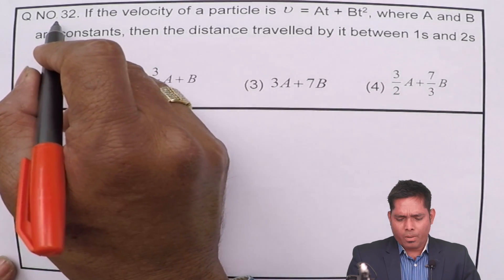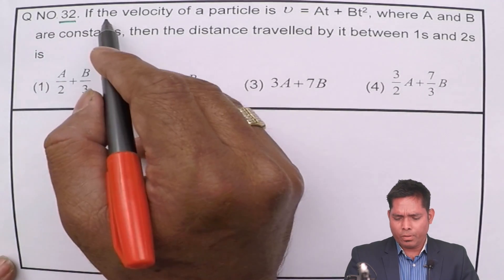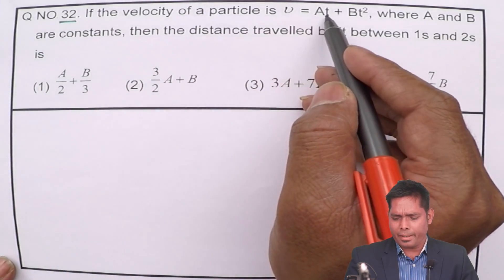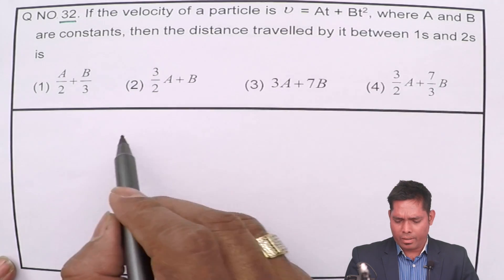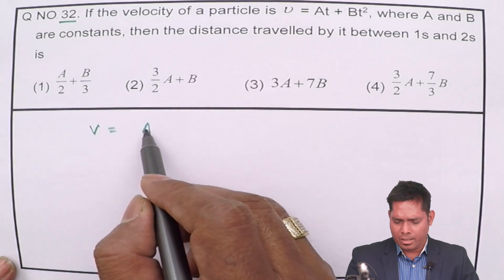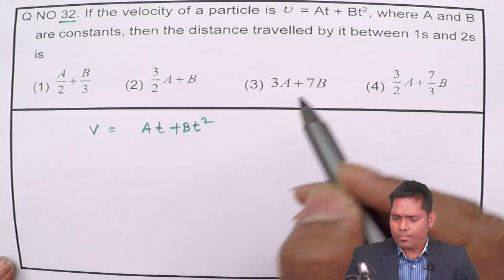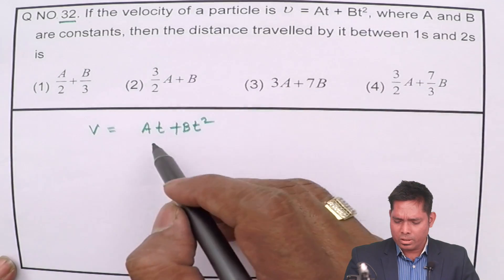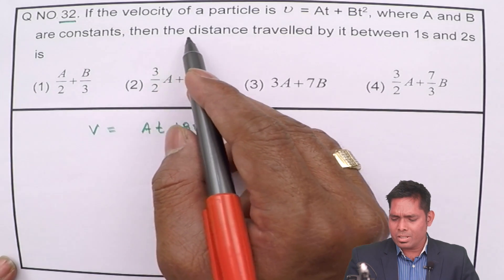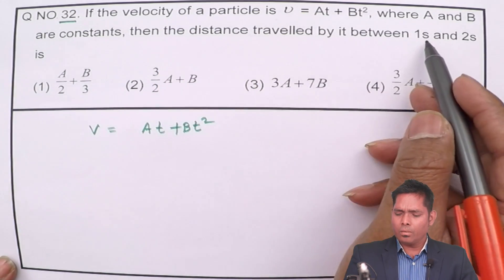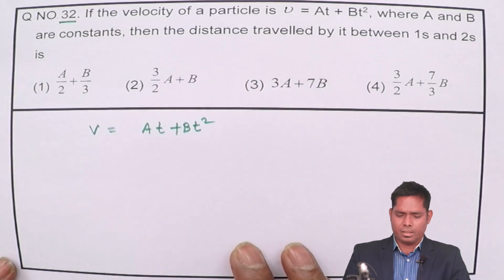Let us discuss question number 32. If the velocity of a particle is given by AT plus BT square, so velocity is given by AT plus BT square, where A and B are constants, then the distance traveled by it between 1 second and 2 second is.